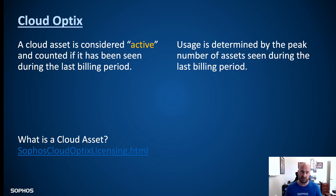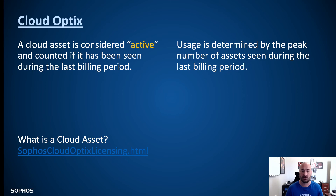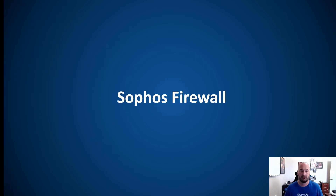Cloud Optics is our cloud posture assessment tool, licensed by cloud assets. These are cloud assets that have been active during the last billing period — not a snapshot at a particular time, but the total number of assets seen during that given month. At the bottom of the page, you can find what a Sophos cloud asset is in AWS, Azure, and Google Cloud environments. This is going to be the peak usage — so if you normally have 10 devices and an auto-scaling event takes you up to 20, at the end of that month you will be charged for 20 Cloud Optics asset licenses.